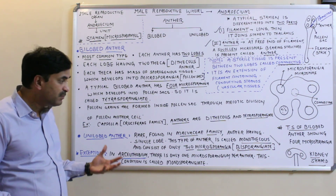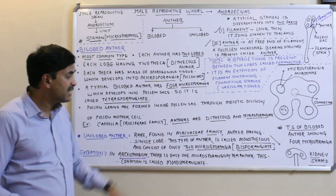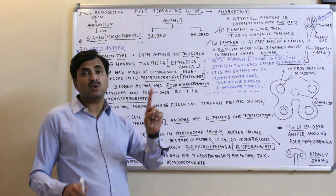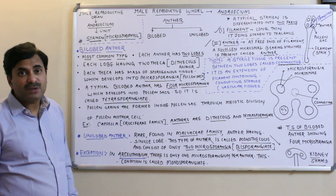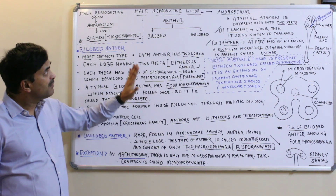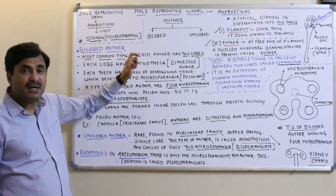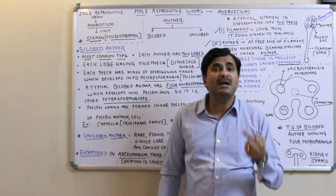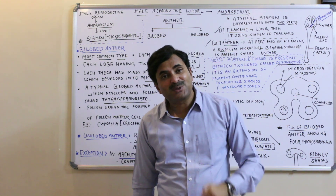There is one more exception: a monosporangiate condition. In Arceuthobium, there is only one microsporangium per anther, and this condition is called monosporangiate. This is very rare and only found in Arceuthobium. In summary, today we discussed the male reproductive organ of the flower — the androecium — including the stamen, its two parts (filament and anther). In the next video, we will discuss the structure of the anther and its wall layers.